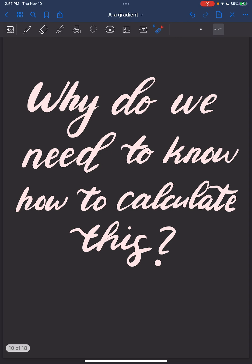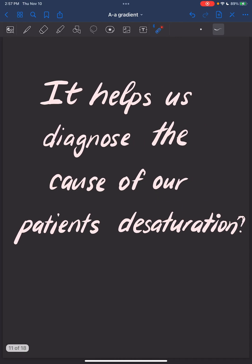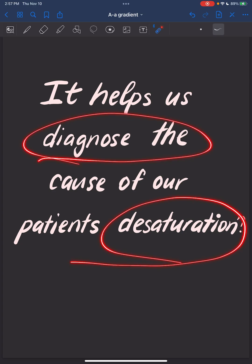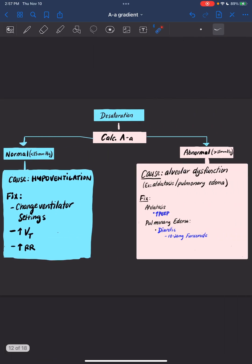Why do we need to know this calculation? It's going to help us diagnose why our patient is desaturating. For example, our patient is desaturating, so we're going to calculate our A-a gradient. If it's normal, which means it's less than 15 millimeters of mercury, our cause of desaturation is likely hypoventilation. We can fix this by changing our ventilator settings. We can increase the tidal volume or increase the respirations. But which one is best? You're right, tidal volume. That's going to give us the biggest bang for our buck.